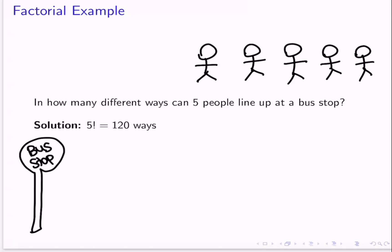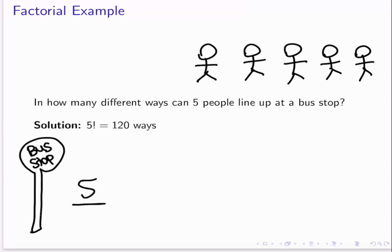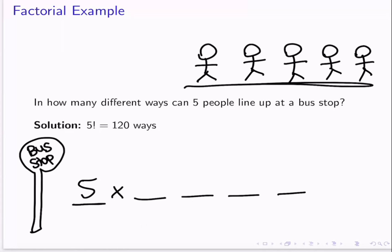Out of these 5 people, how many possibilities are there for who could end up first? Well, it could be any of these 5 people — person 1, 2, 3, 4, or 5 — so there are 5 possibilities. Then what about the second spot in the bus stop? Well, one of these 5 people already lined up in the first spot, so now we have one less person.